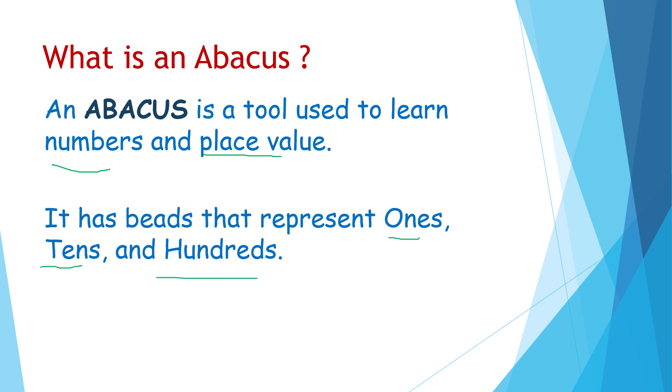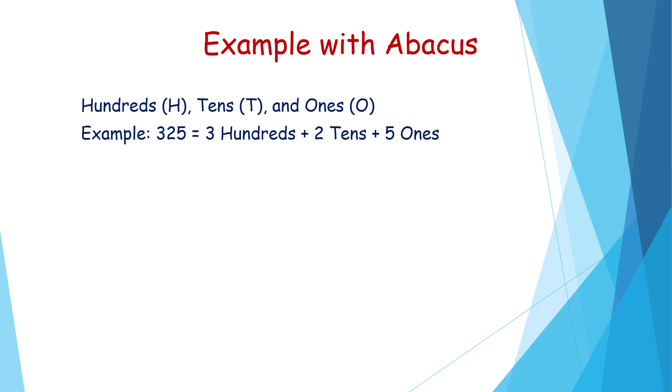Now here is example one. What is the number we are taking? 325. How to write it? Three hundreds plus two tens plus five ones is equal to 325.